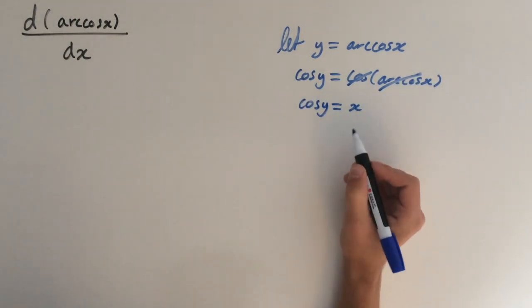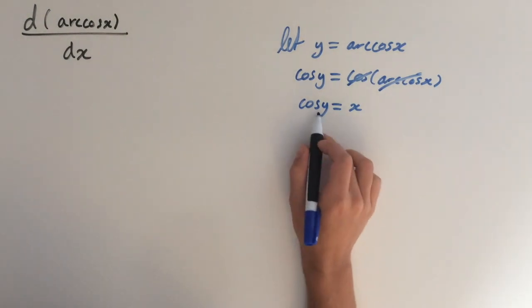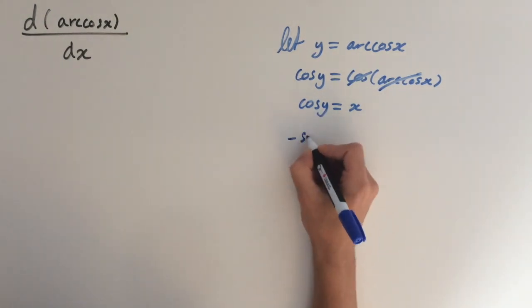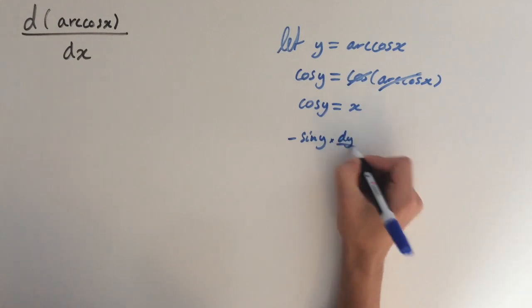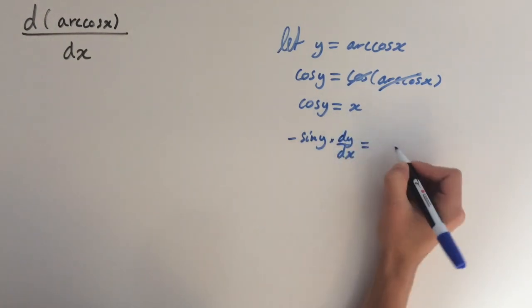And now we're going to implicitly differentiate. So the derivative of cos of y is minus sine of y. And then we have to use the chain rule inside, so the derivative of y is dy/dx. And this equals 1.